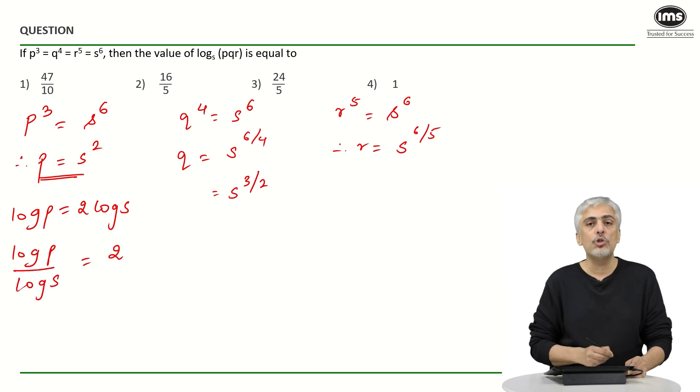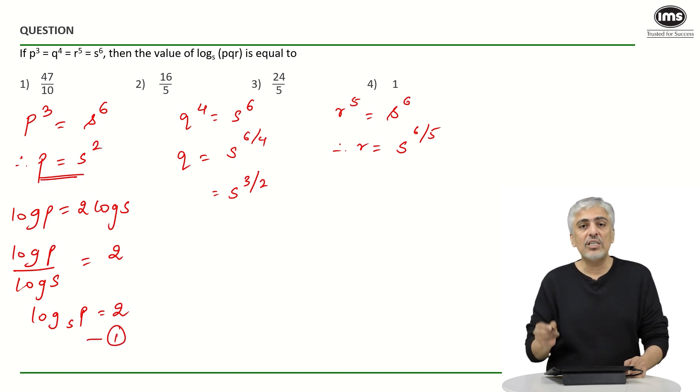And from the properties of log, you should know log p upon log s is nothing but log p to the base s. So, log p to the base s is 2. Once you understood this, suppose this is your equation 1. Once you have understood this, the others you do not have to do all over again.